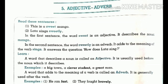It answers the question: how does Lata sing? — sweetly. A word that describes a noun is called an adjective. It is usually used before the noun it describes. Adjectives come before the noun. A word that describes a noun is called an adjective.